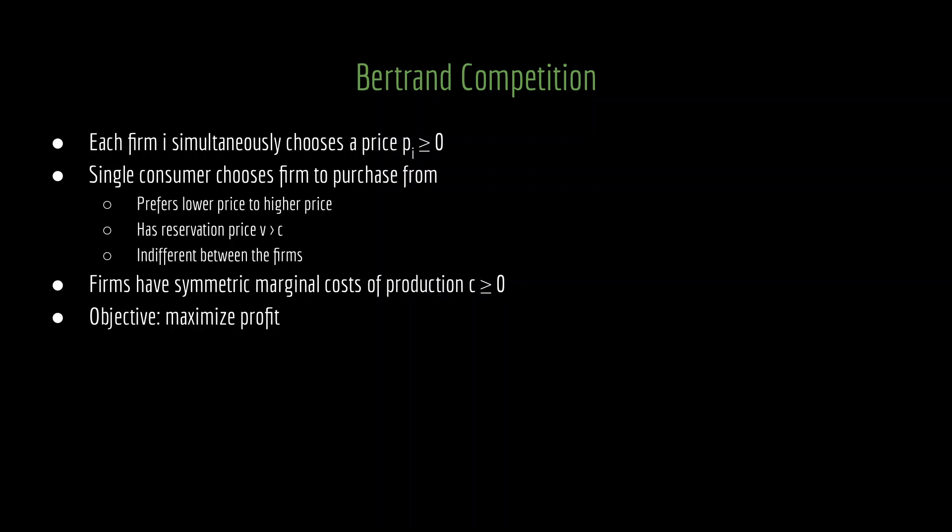Why is that? This is a basic assumption so that we have a deal actually getting done. If it were the case that the reservation price of this consumer was less than the marginal cost of production, then the price at which the consumer is willing to buy is so low that no firm wants to produce at that price. That would be very uninteresting. So to get firm 1 and firm 2 to want to do business with this consumer, it makes sense to have that reservation price be set larger than C. Indeed, because this is such a basic assumption, we're not even going to see V appear in the rest of this lecture, although it will show up once again when we get deeper into Bertrand competition.